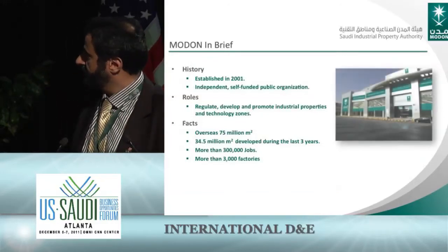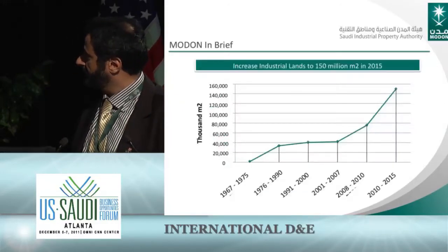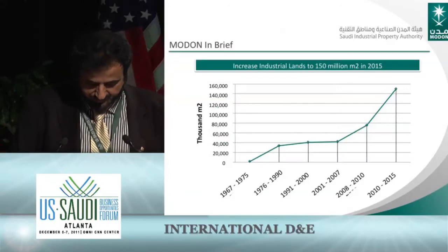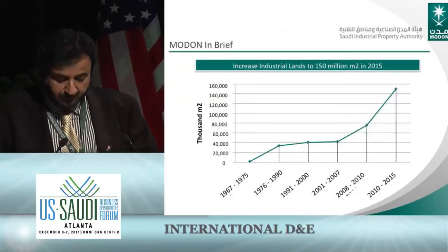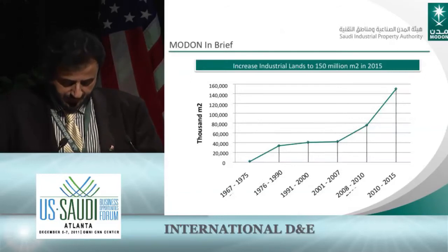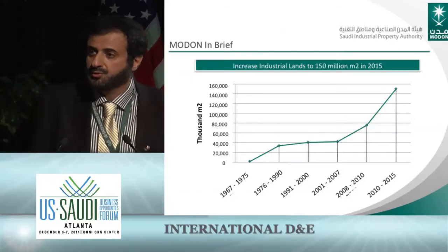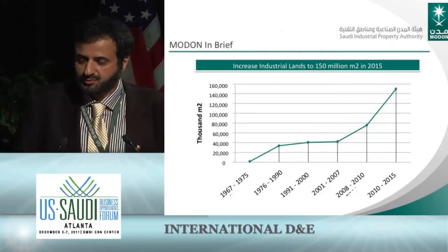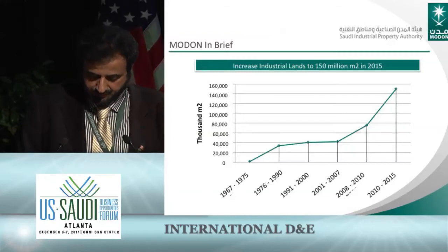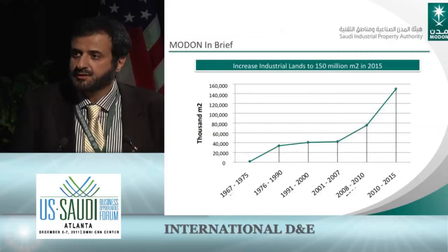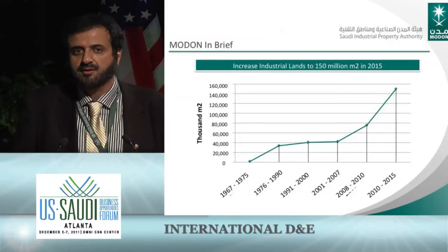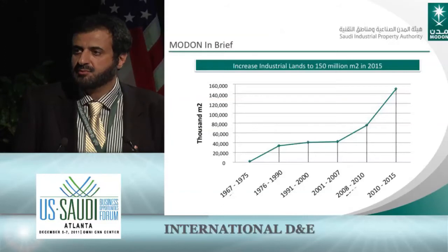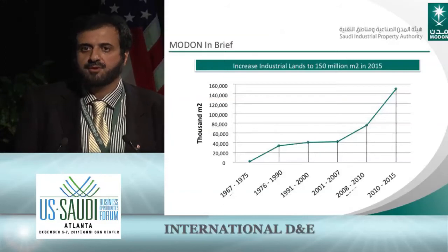The growth we are seeing is significant: from 1967 to about 2007, we developed about 40 million square meters. And from 2007 to 2015, we plan to add another 110 million square meters of developed area. That will basically almost quadruple the area of industrial estates available for manufacturing companies.